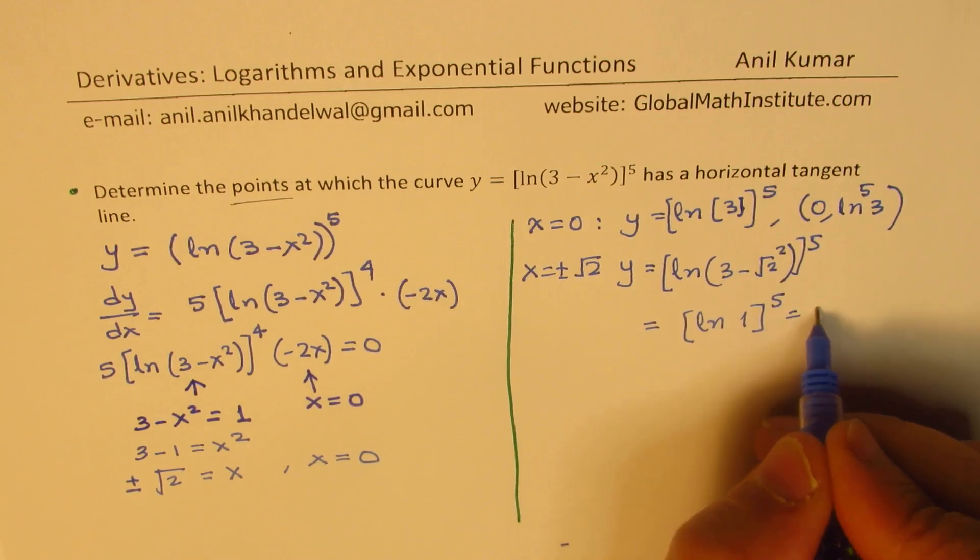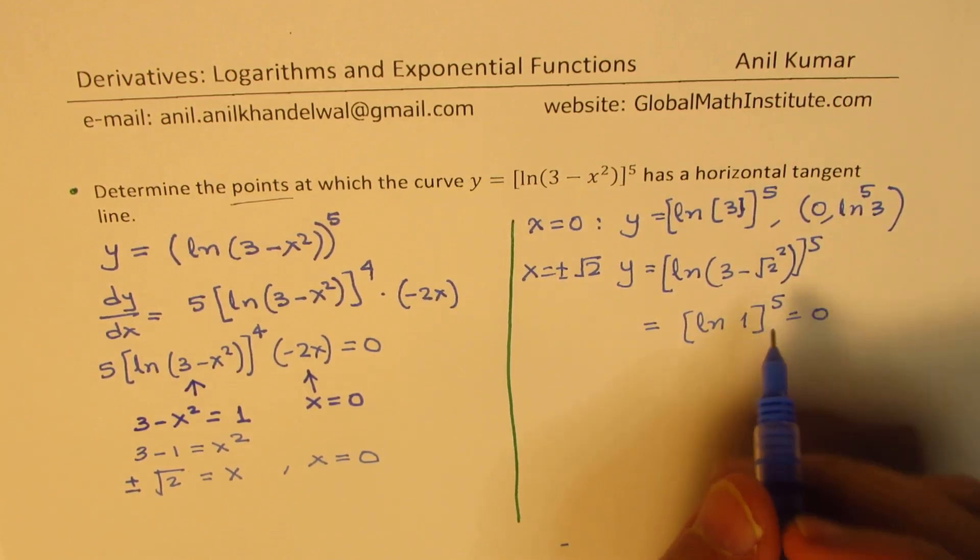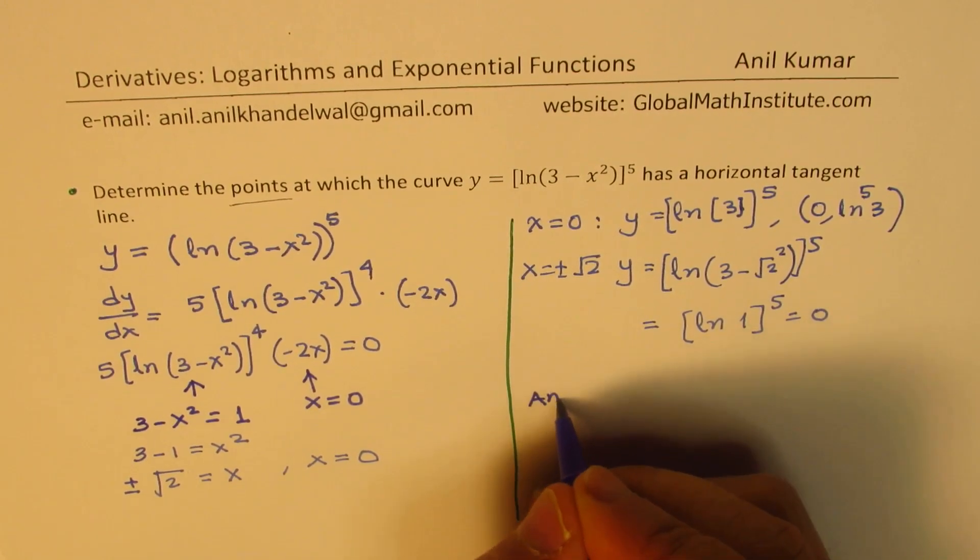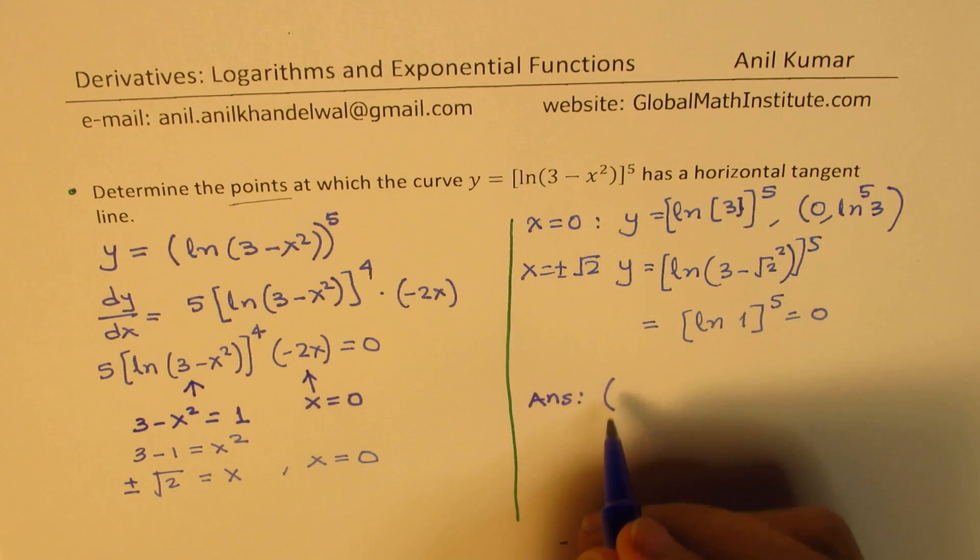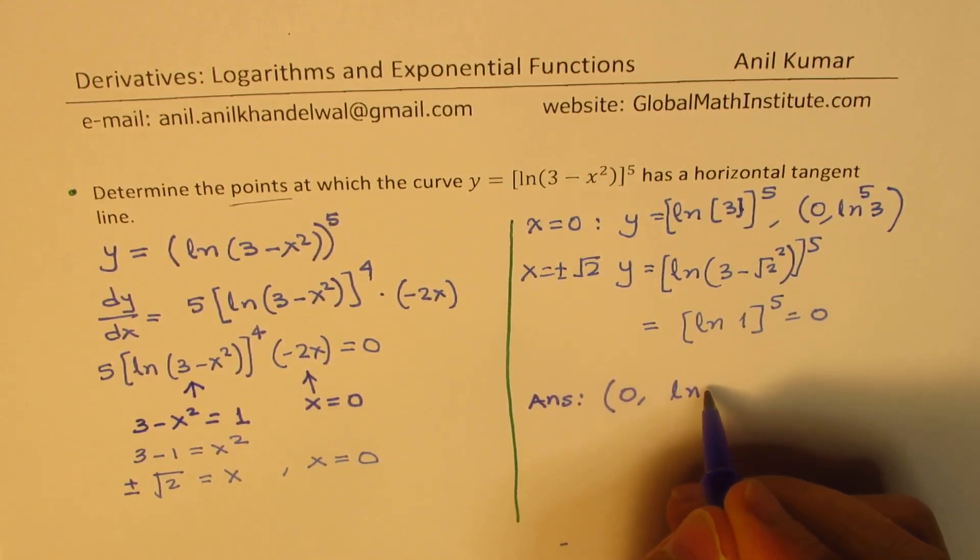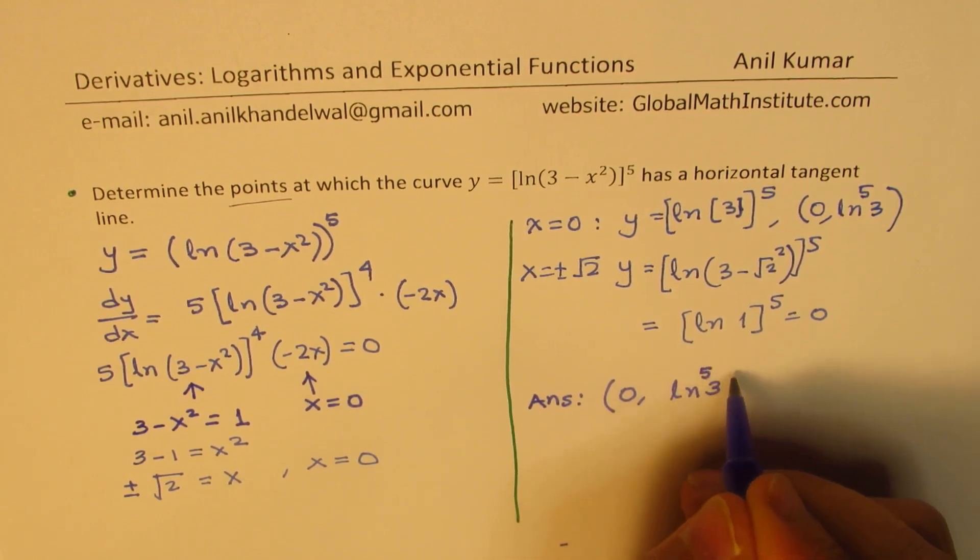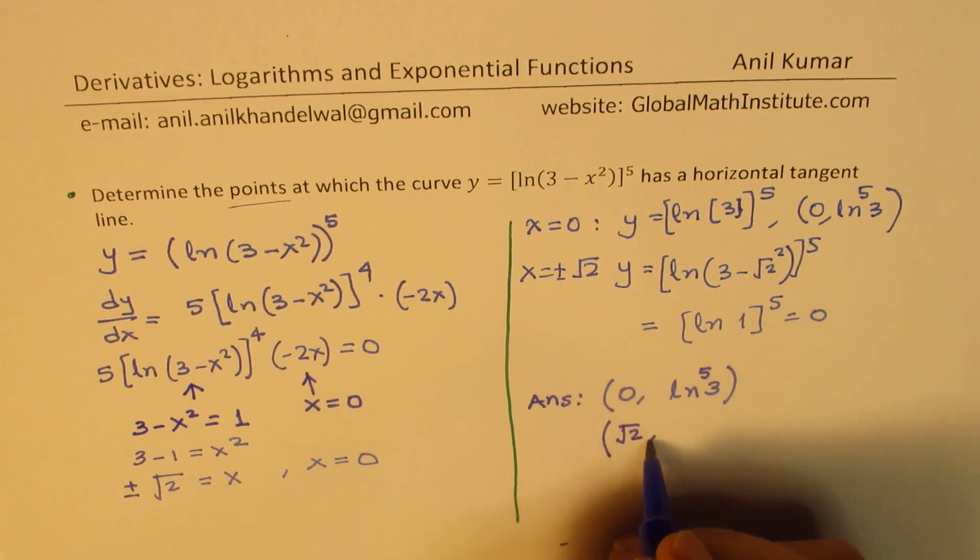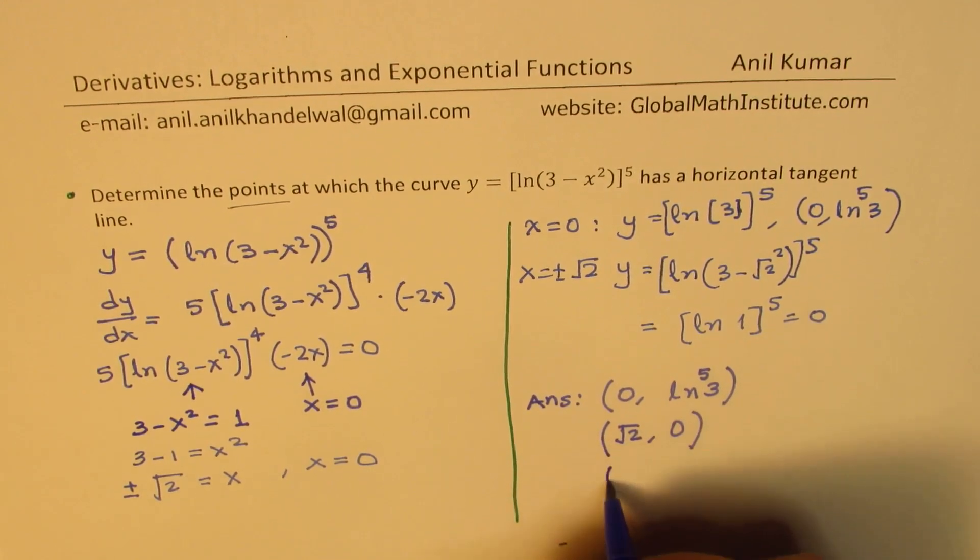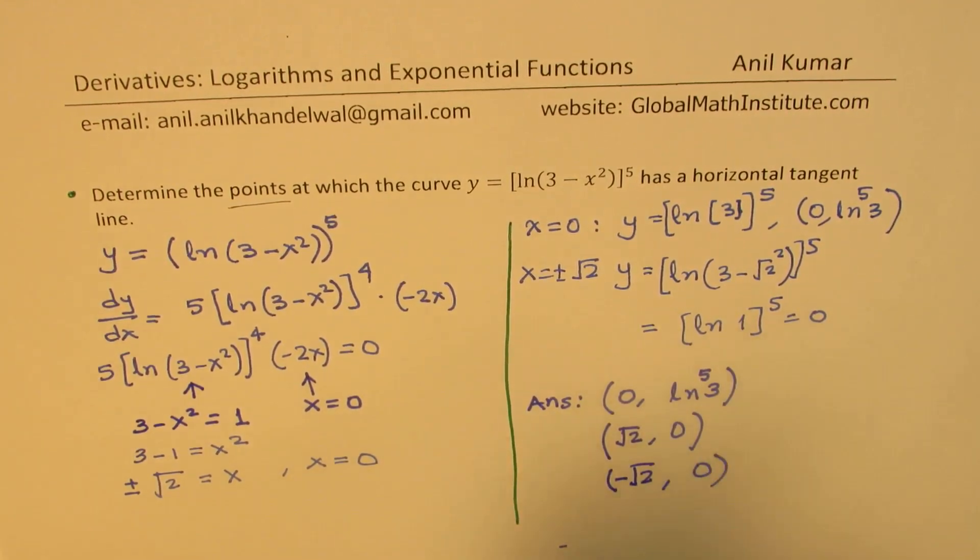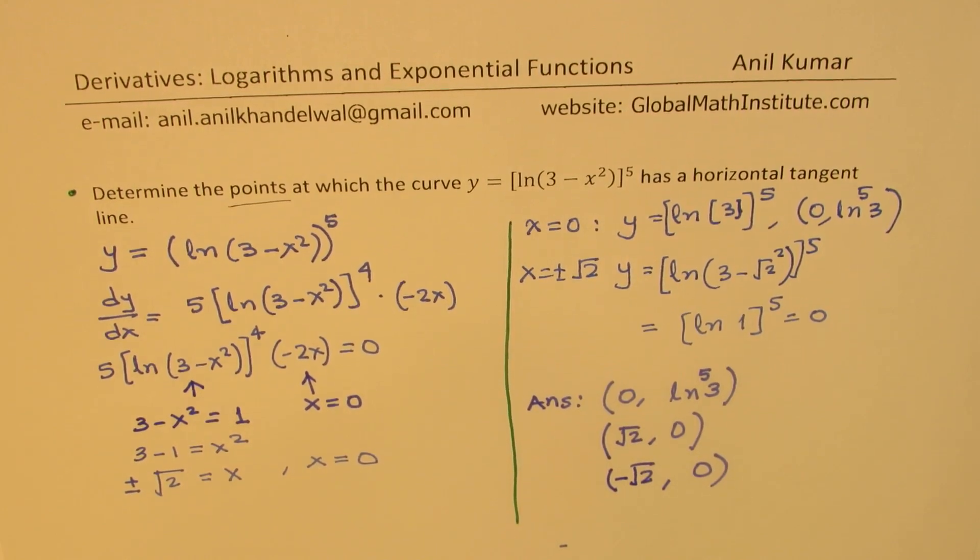And ln 1 is zero. So we get that as zero. And now we can write down our answer. The points are: one is when x equals zero, then the y value is ln 3 to the power of 5. And then we have when x value is square root of 2, the y value is zero. And when x value is minus square root of 2, the y value is zero. So we have these three points at which the function will have a horizontal tangent line.